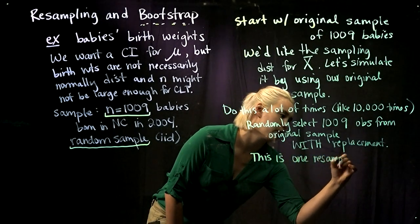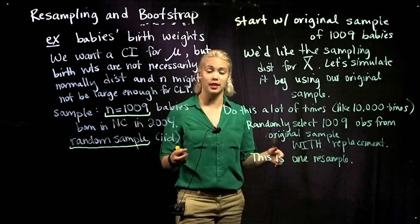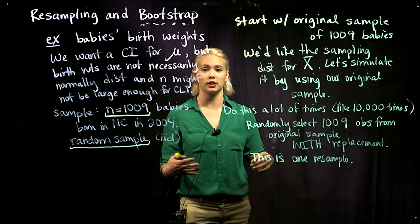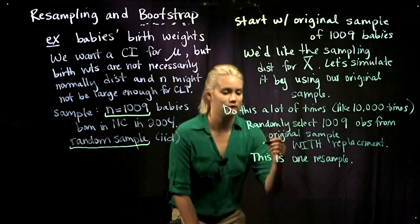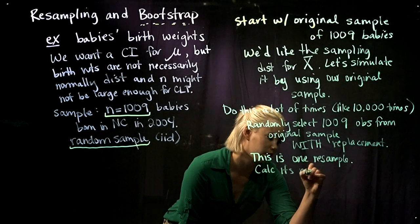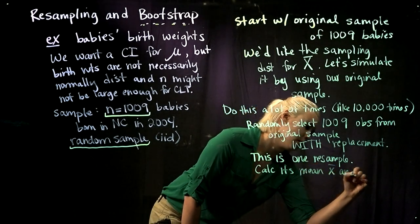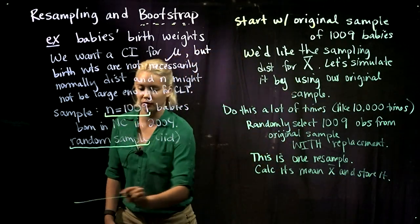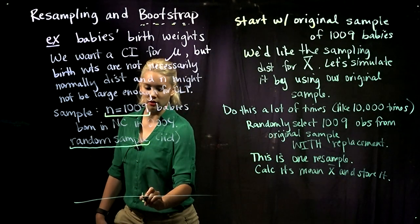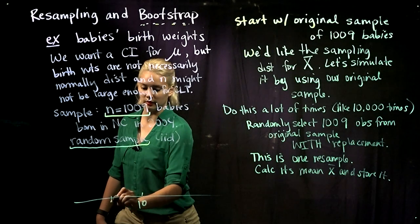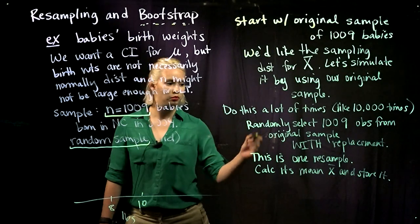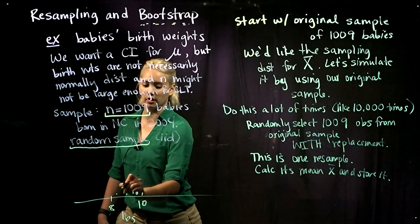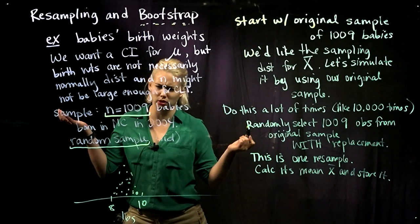With that resample, we calculate the mean — or whatever statistic we're interested in. Here we're looking for the sampling distribution for X-bar, so we calculate that resample's mean and store it somewhere. For example, if we have a distribution going from roughly 8 to 10 pounds, and this resample had a mean of 9.7, we'd keep track of that and keep doing our resamples until we eventually build up the distribution.